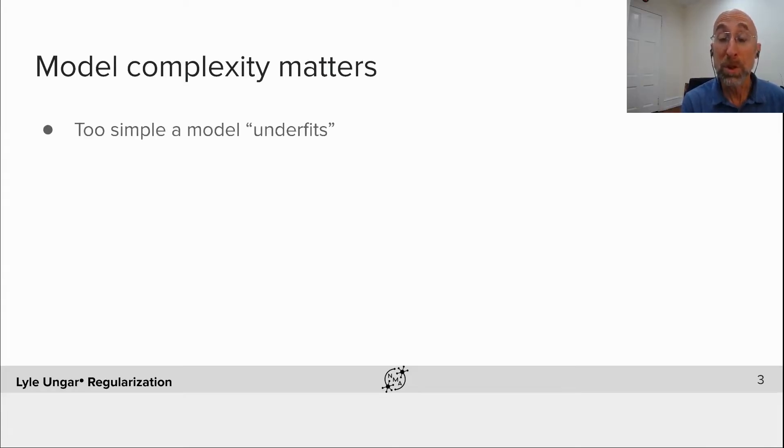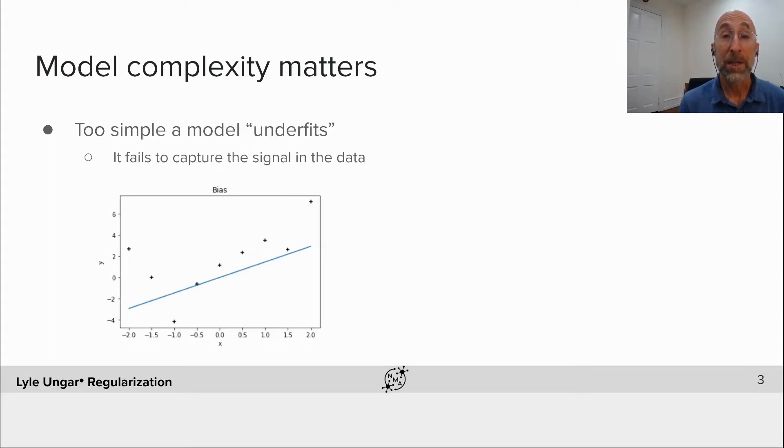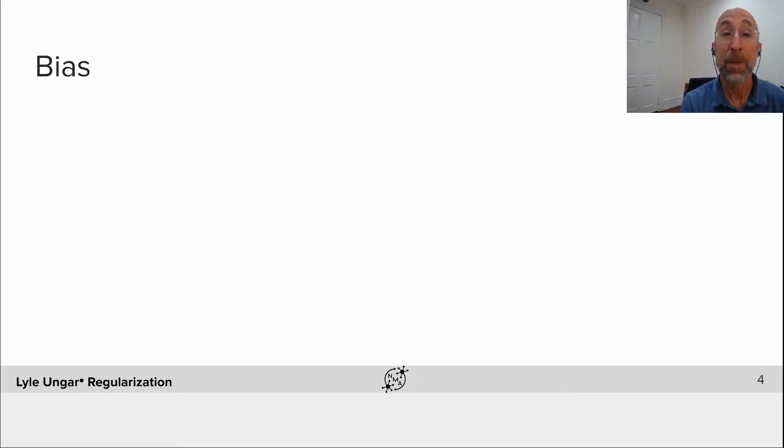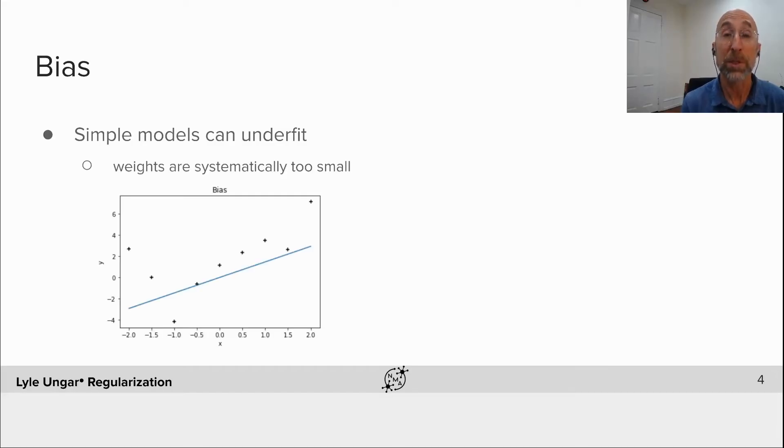If you use too simple a model, it will tend to underfit the data. It won't capture all the signal in the data. So if you look at this simple data, it's quadratic data with some noise in it. If I fit a line to it, the blue line fits sort of well, but if we used a fancier model, we could probably capture more of the data. This is often in math terms called bias. The simple models systematically give too small weights and too small predictions.